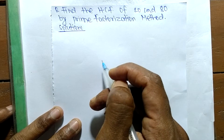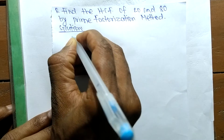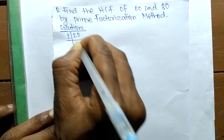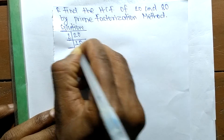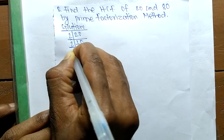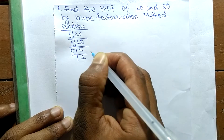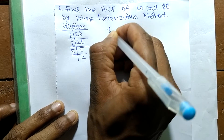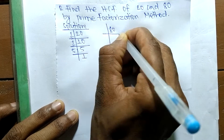First we find out the prime factors of 20. It is 2 times 10, which makes 20; 2 times 5, which makes 10; and 5 times 1, which makes 5. So the prime factors of 20 are found.